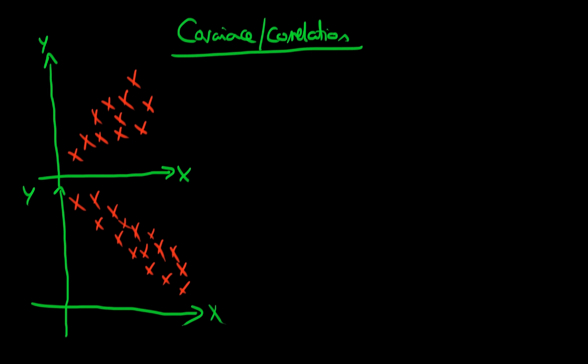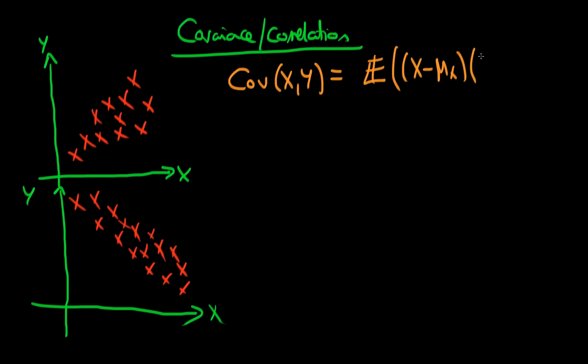The way we do it mathematically is we define something which we call the covariance between random variable X and random variable Y. That's defined as being equal to the expectation of X minus mu X, where mu X is the mean of X, times Y minus mu Y.